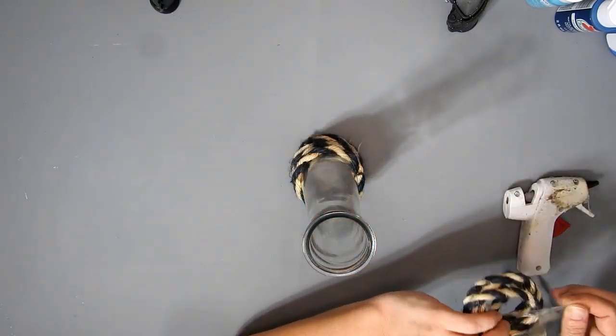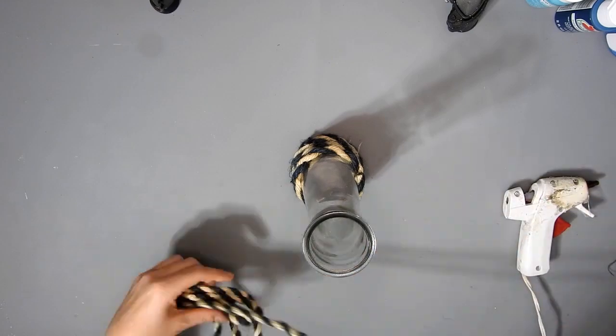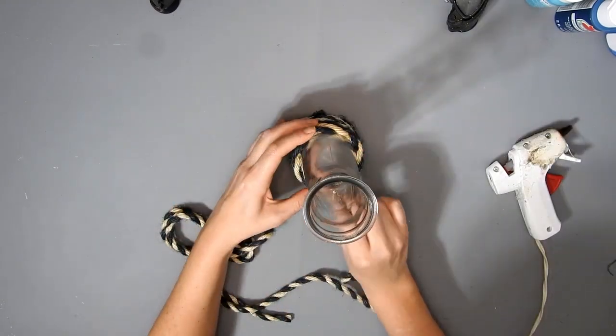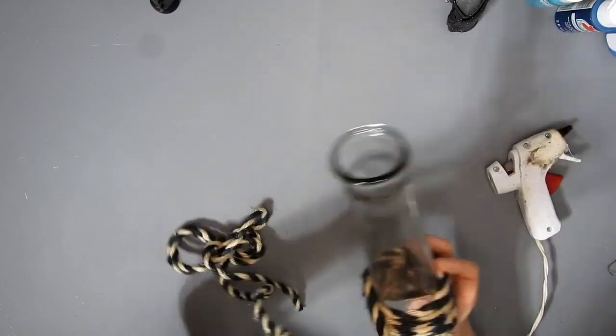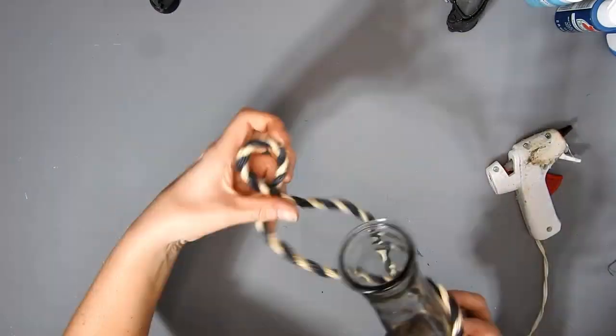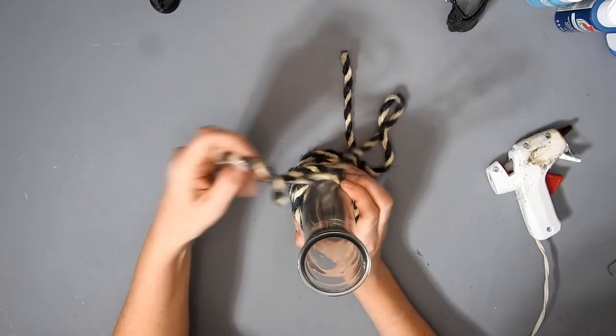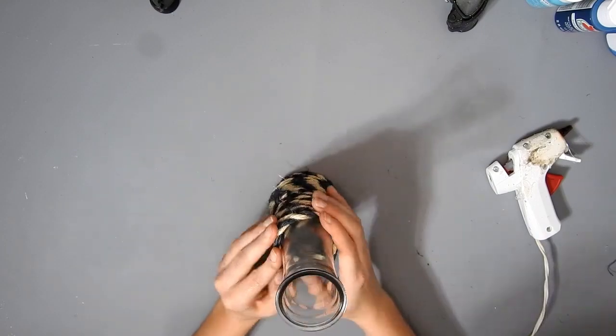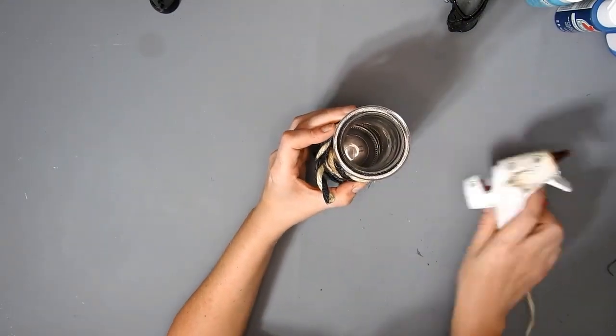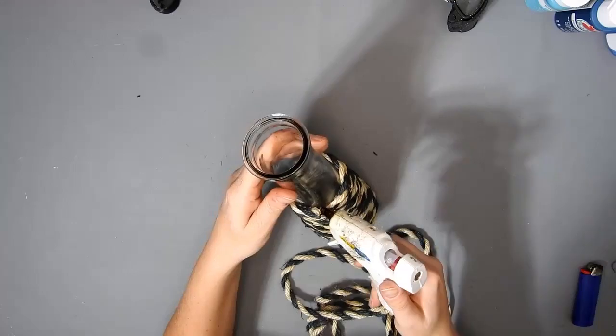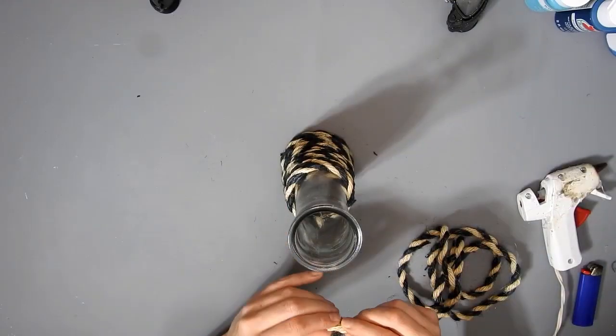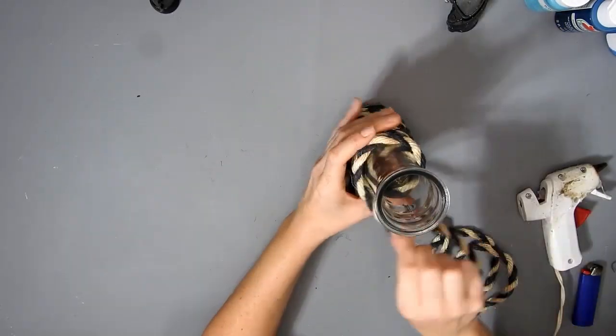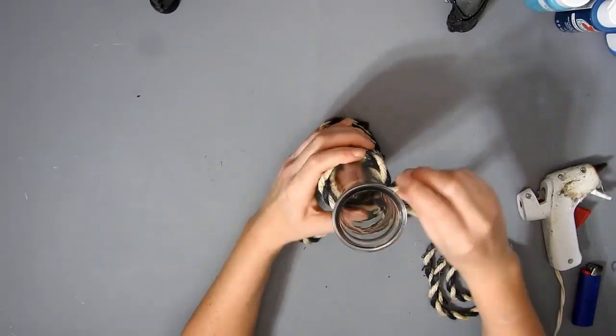I just hot glue to the next one on, trying to match it up so you can't notice the join, and then repeat the same again wrapping it around. You could hot glue it all the way around if you want, but I might want to use it for something else. Then I put the third one on and just wrap it around.